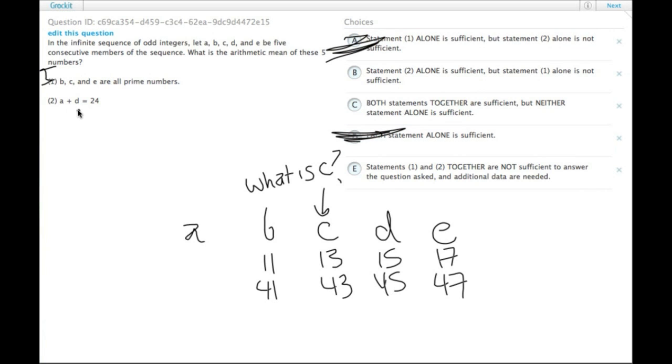Statement two tells us that A plus D equals 24, which seems like it wouldn't be enough, but if we take C as kind of the control group,